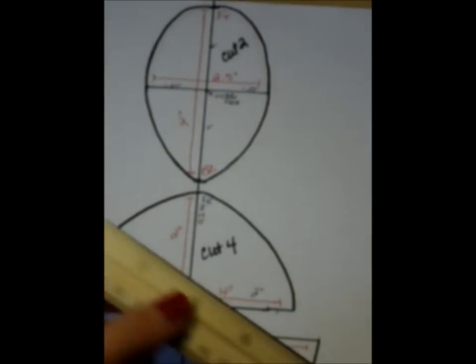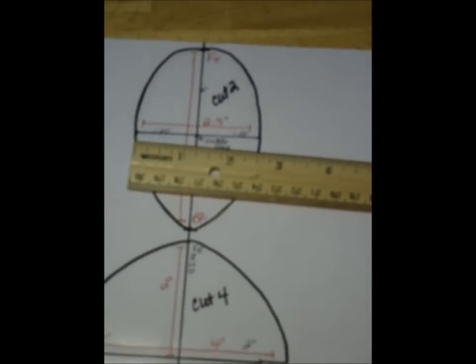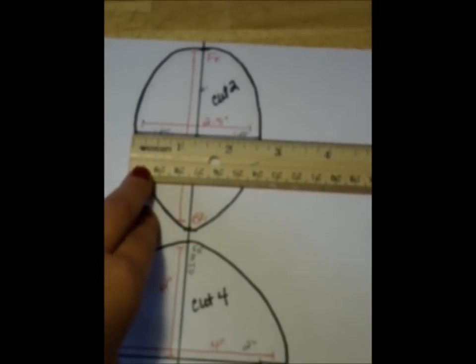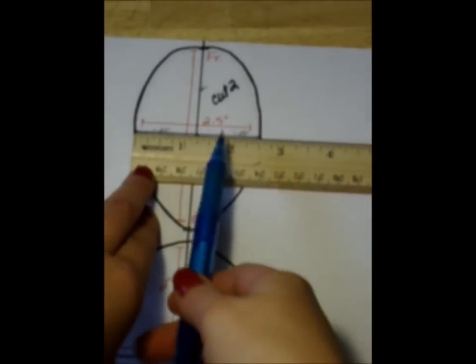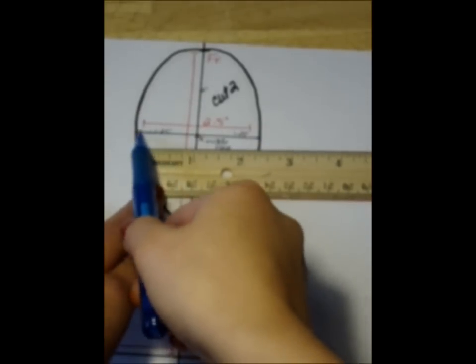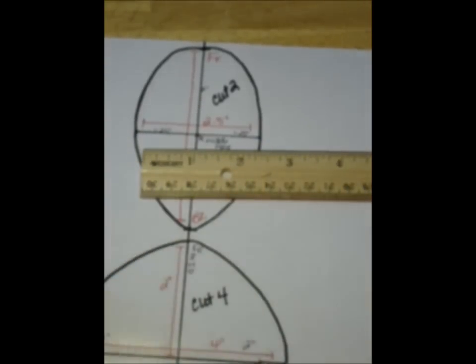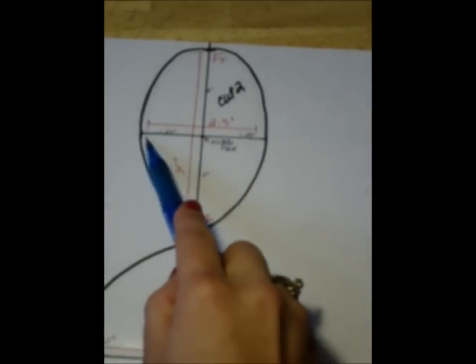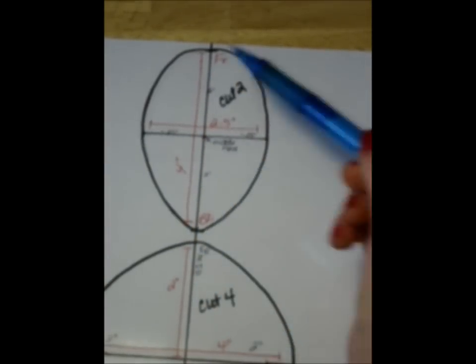Then you're going to want to measure 2 1/2 inches sideways. Just find that middle point and go an inch and a quarter off each one. Make your points and then just connect them.